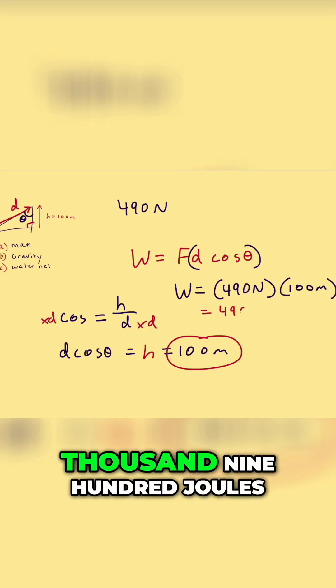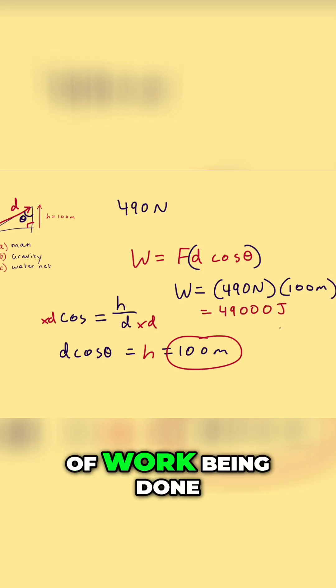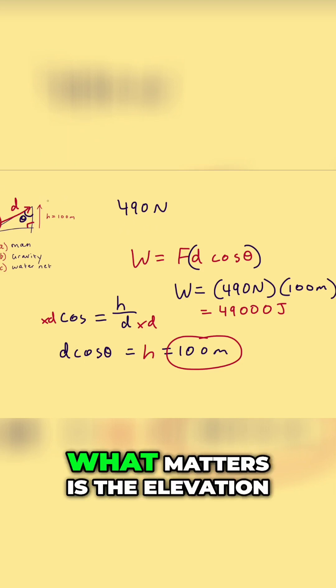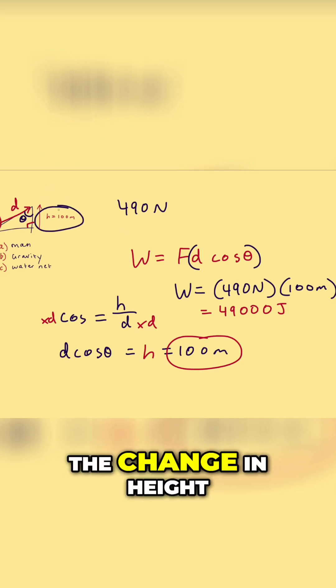This gives you 4,900 joules of work being done by the Kung Fu Master. So that means when it comes to work being done, what matters is the elevation, the change in height.